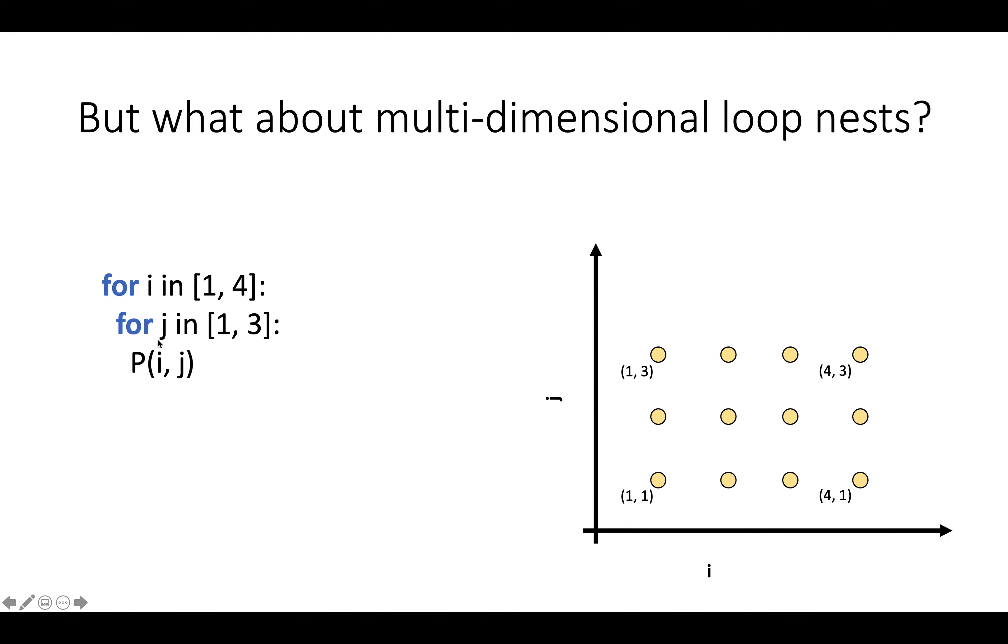So what if you have something like for i in 1 to 4, for j in 1 to 3, do statement p(i,j)? So in this case, by analogy to the 1D case, it's probably intuitively obvious that we could represent statements in the program by two-dimensional vectors. So for example, if this is the i-axis and this is the j-axis, the first statement in this loop would be statement (1,1), and then the next statement would be (1,2), which is here, and then (1,3).